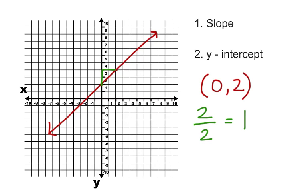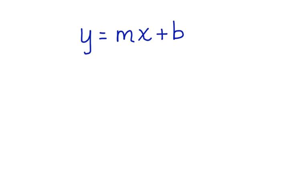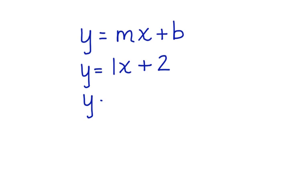Now let's write the equation of the line. First, we write slope-intercept form: y equals mx plus b. That gives us y equals 1x plus 2. Now because our slope is 1, we actually don't even have to write that. We can write the simplest form of the equation, which is y equals x plus 2.